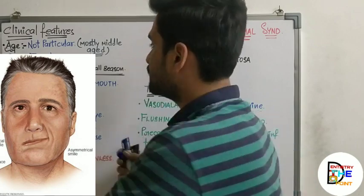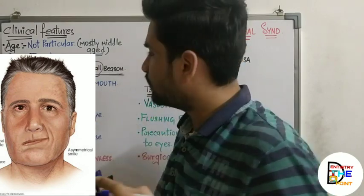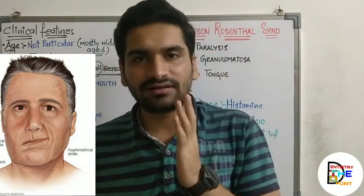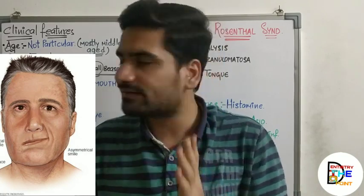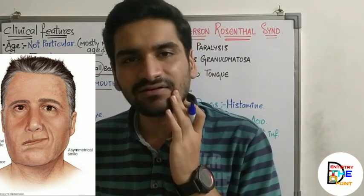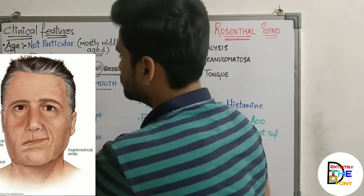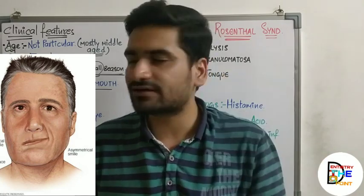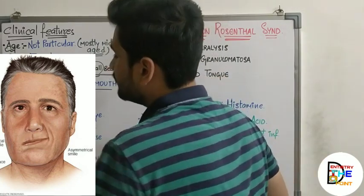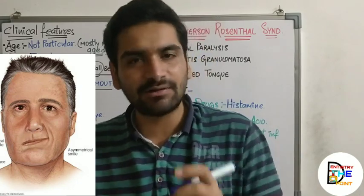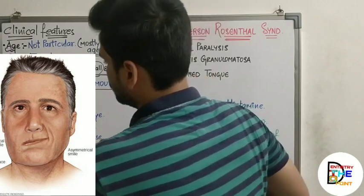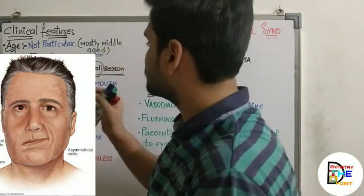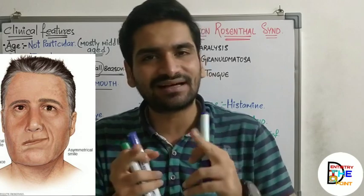It usually develops in spring and fall season. As there is paralysis of all the facial muscles of one side — it is a unilateral involvement — drooping of the corner of the mouth on one side is seen. The corner of the mouth droops downward and saliva will dribble from that area.